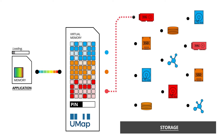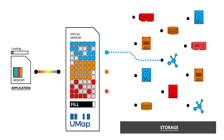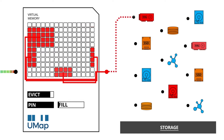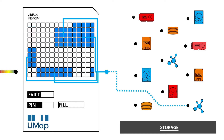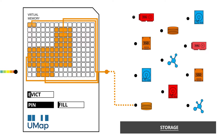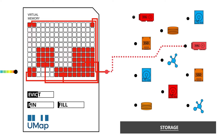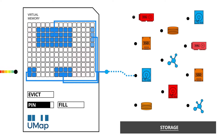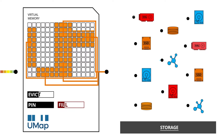Here's how it works. As data is accessed in UMAP's virtual memory space, chunks of data are brought from back-end storage into the processor's main memory for fast access. The data chunks fill the virtual space, or cache, temporarily, which means they are ready to be used directly by the processor when needed.